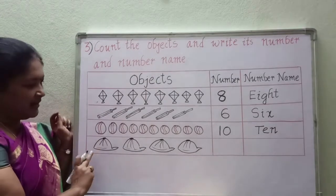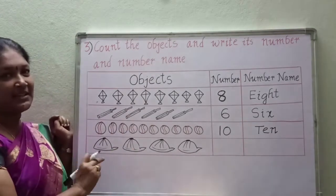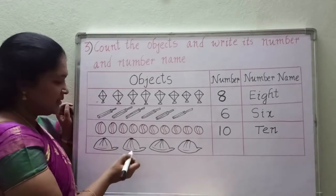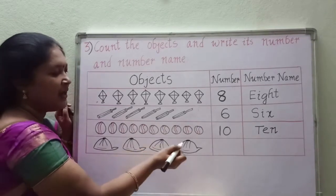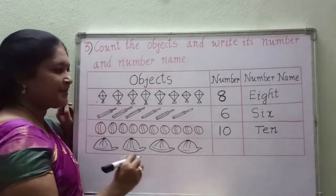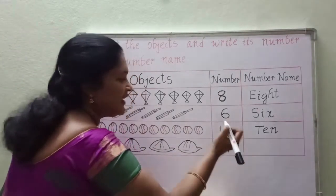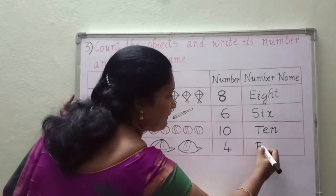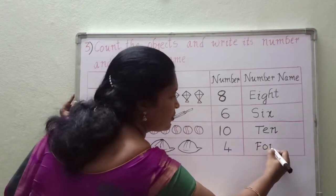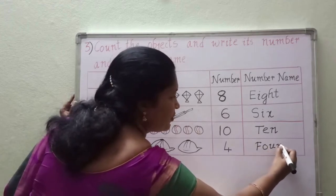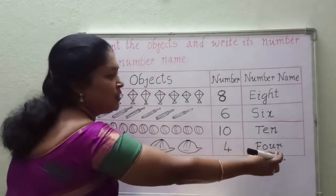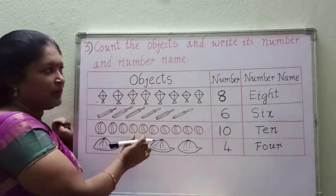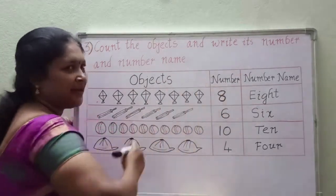And the last one — here caps are there. Let us count how many caps are there: 1, 2, 3, 4. 4 caps are there. So write 4 number here. What is the spelling of 4 children? F-O-U-R. So these are the counting of objects and writing the number and number name.